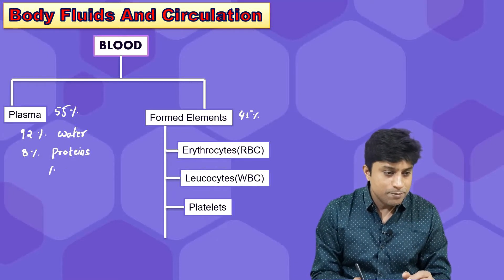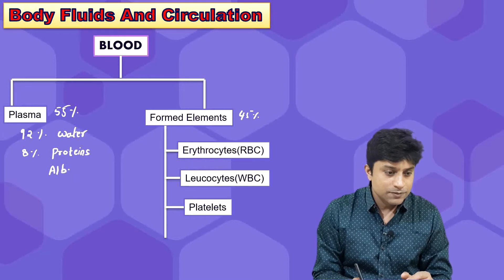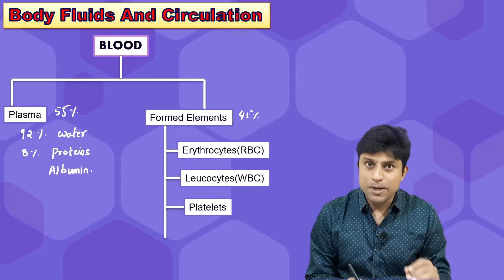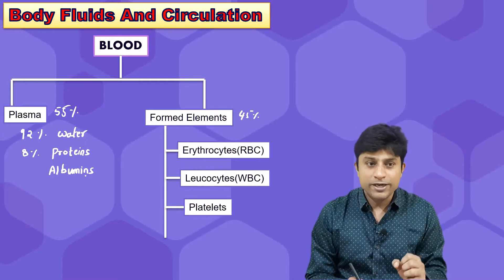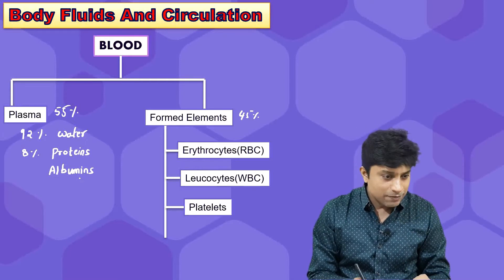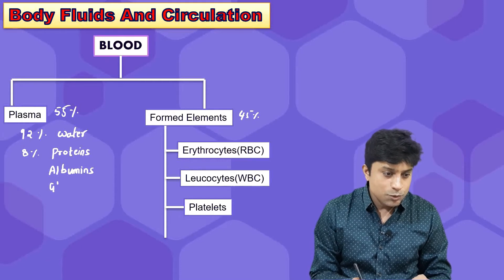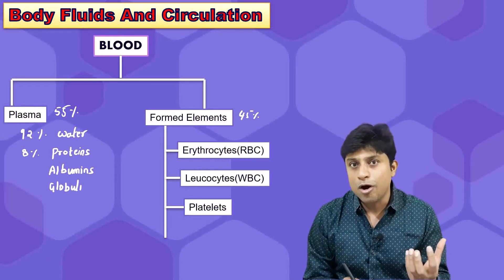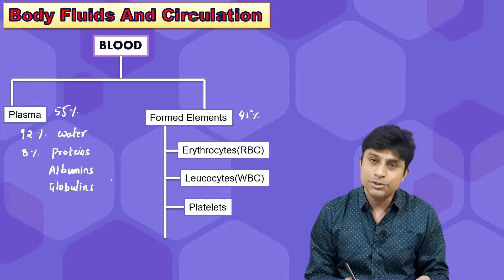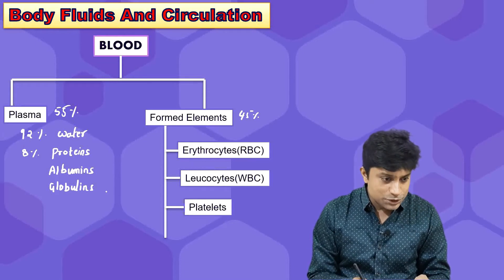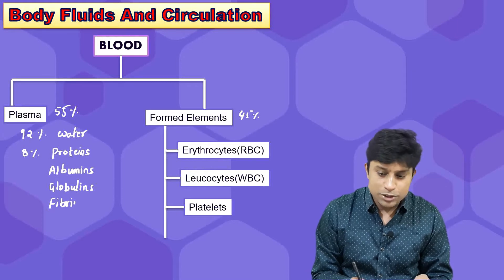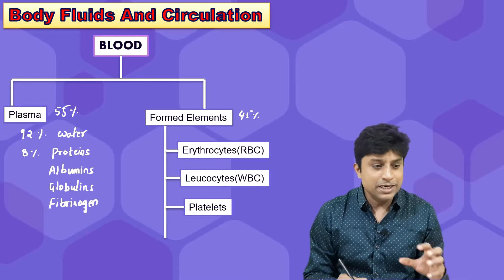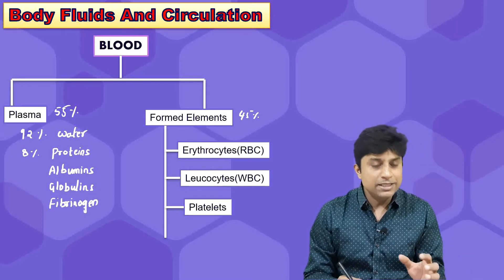Among the proteins, albumins are most important — they are responsible for maintaining osmotic balance in body fluids. Next, there are globulins: alpha, beta, and gamma globulins, which are antibodies. There is also fibrinogen, which is a clotting protein. These are the main proteins present in the plasma.